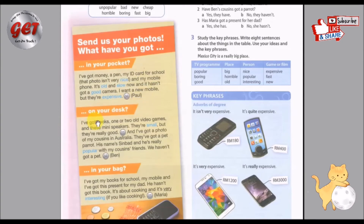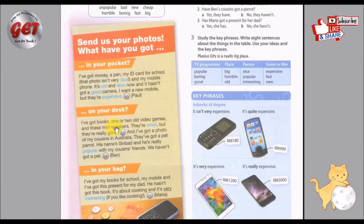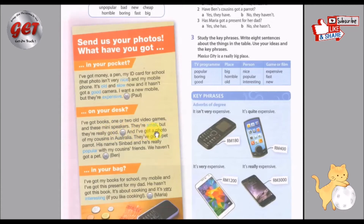What have you got on your desk? 你的书桌上有什么呢？我有几本书，一至两套的电子游戏，还有这一对迷你扬声器。They are small — 扬声器都很小。But they are really good — 但是扬声器都操作得很好。And I've got a photo of my cousins in Australia. 然后我也有一张在澳洲的堂兄弟姐妹们拍的照片。